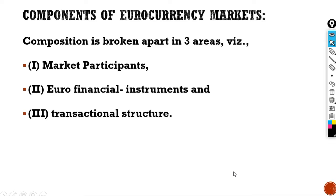The next thing we need to go through is the components of Euro currency markets. The composition of Euro currency markets is broken into three areas: number one, market participants; second, Euro financial instruments; and third, the transactional structure.